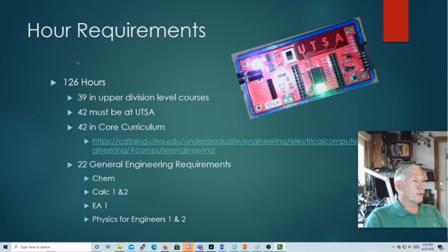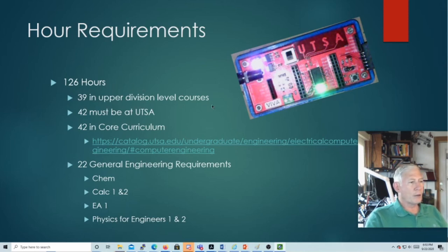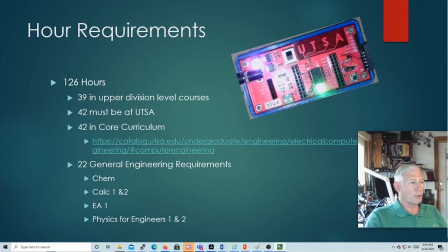So, the hour requirements: to get your BS in computer engineering, which is an ABET-accredited degree at the University of Texas San Antonio, you have to take 126 hours. 39 of those hours have to be in upper-division-level courses, and 42 must be on campus at UTSA. You could transfer in with other credits, but a minimum of 42 must be taken here. There are also 42 hours that have to be in our core curriculum.